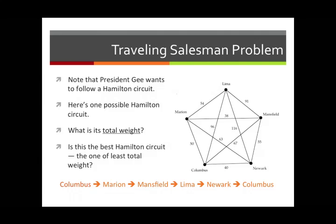The total weight of a Hamilton circuit means the total distance that would have to be traveled on that trip. You take the edges in the Hamilton circuit and add up their weights. Pause the video for a moment and figure out what the total weight of the given Hamilton circuit is. The answer is 335 — you take the weights of the five edges in the circuit and add them up to get 335.